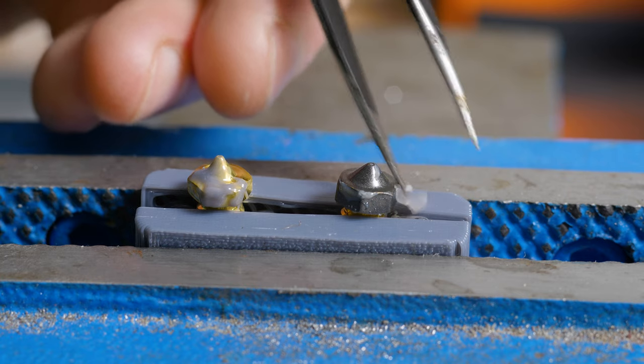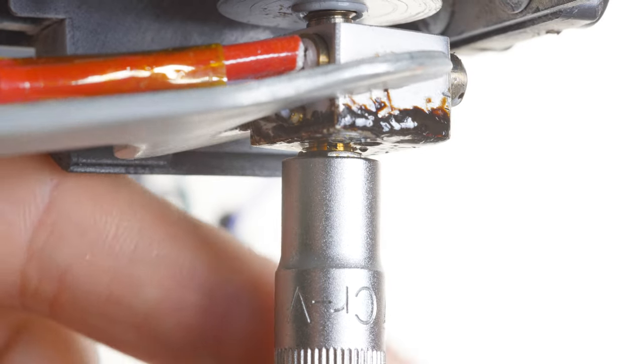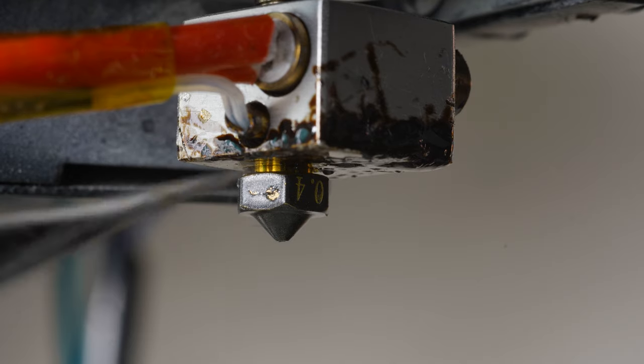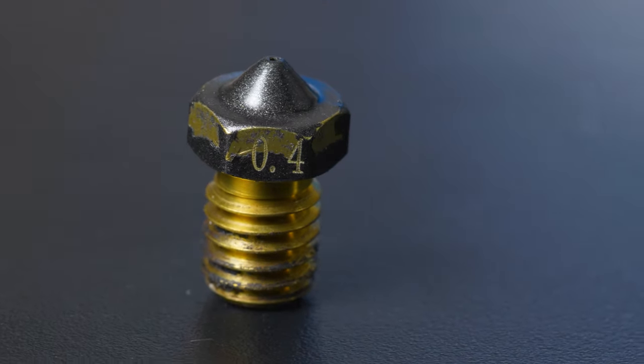You can see just installing the nozzle onto the hot end scuffed off some of the coating, and I've been testing one of these nozzles for a few weeks in my Voron, removing the nozzle just a handful of times, and the coating on the sides of the nozzle is almost completely worn away now.